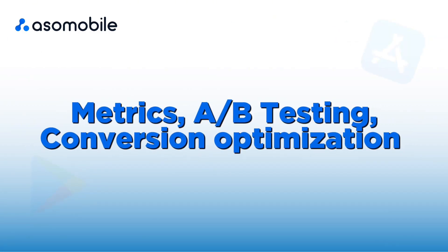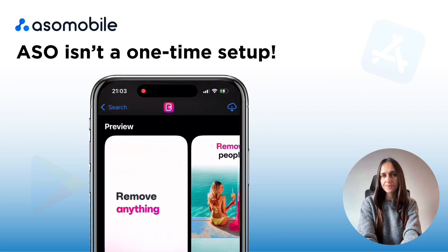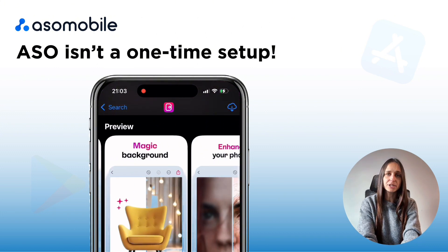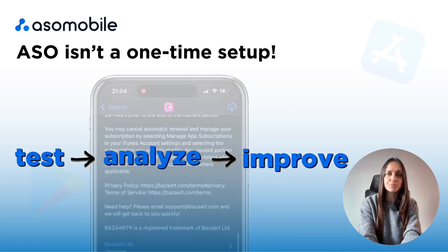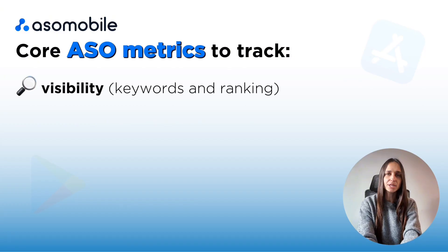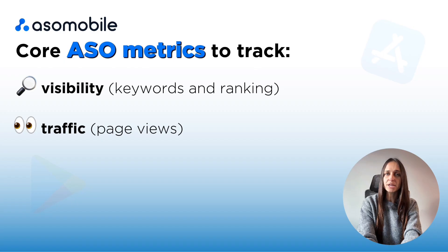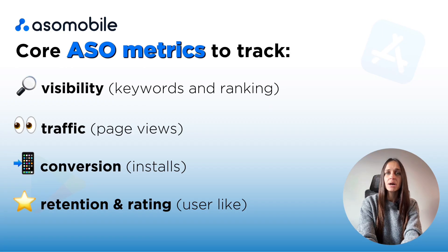Metrics, A/B testing, and conversion optimization: ASO isn't just a one-time setup. Even the best keywords, screenshots, or icons stop working over time. The market changes, competitors update their pages, and users' behavior shifts. That's why ASO is an ongoing process — building, testing, analyzing, and improving. Here are the core ASO metrics you should always track: visibility (how many keywords your app ranks for and where it appears in search results), traffic (how many users see your app page and tap to open it), conversion (how many users actually install after viewing), and retention and rating (how engaged your users are and how they rate your app). These numbers show not just your current performance, but where your growth potential really is.